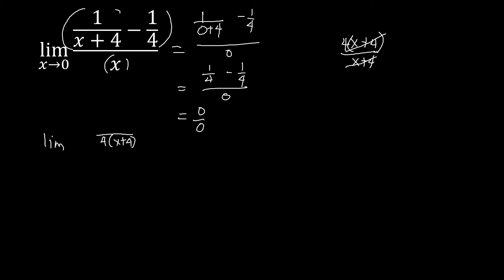The remaining factor we multiply to the numerator, so that is 4. Then we have minus: the LCD 4(x plus 4) divided by the second denominator, 4. We can cancel the 4, leaving x plus 4. Multiply that by 1, so that is x plus 4. Then we have all over x as x approaches 0.